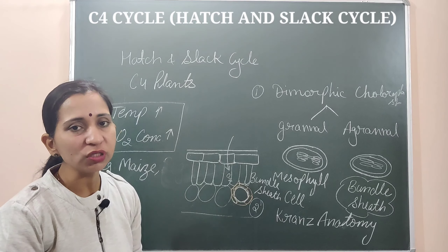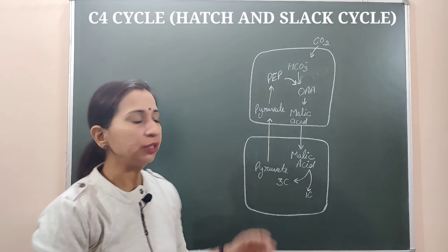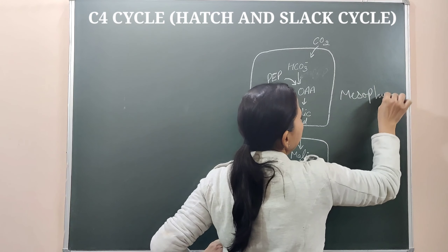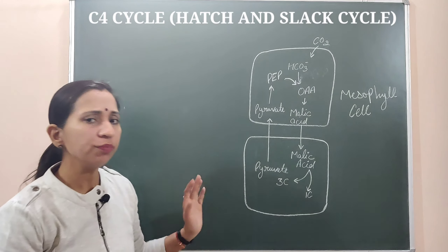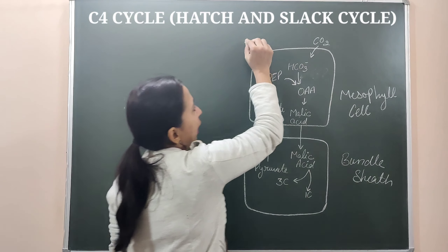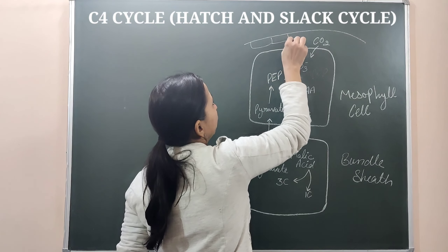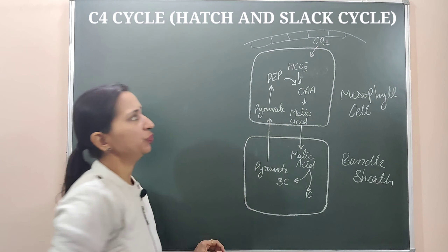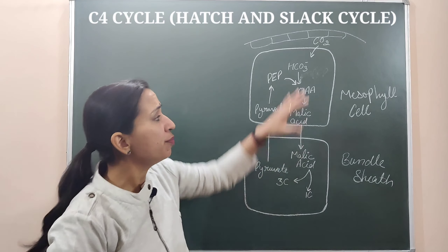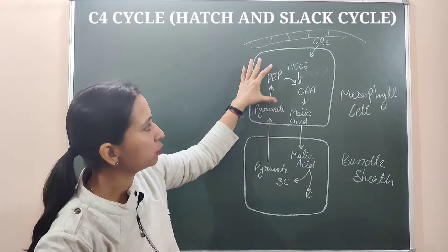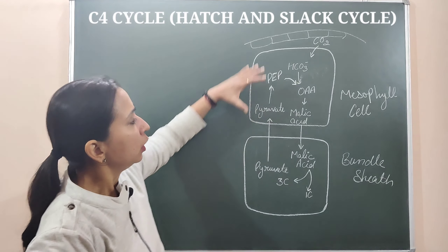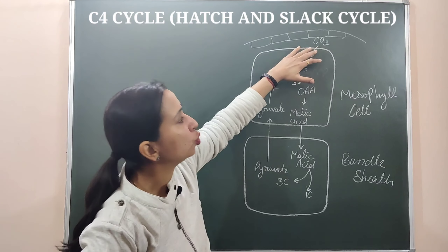Now let's understand the complete C4 cycle. In the C4 plants, we have two types of cells: the upper mesophyll cells and the lower bundle sheath cells. CO2 from the atmosphere enters through the epidermis and is taken in by the mesophyll cells. In the mesophyll cells, the CO2 reacts with water in the presence of carbonic anhydrase enzyme to form carbonic acid (H2CO3), which then dissociates into hydrogen ions and bicarbonate ions.